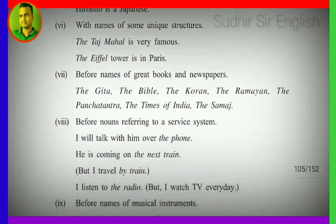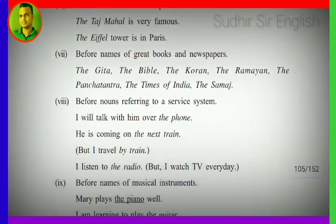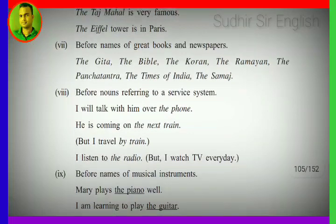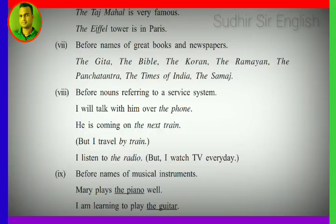Next: before names of great books and newspapers, we use 'the'. Examples: the Gita, the Bible, the Koran, the Ramayan, the Panchatantra — these are great books. For newspapers: the Times of India, the Samaj, etc.